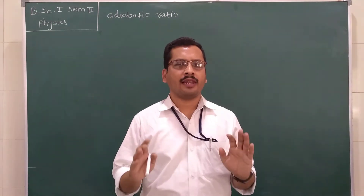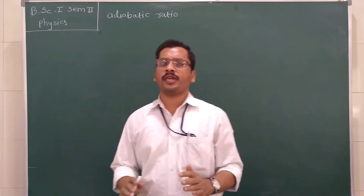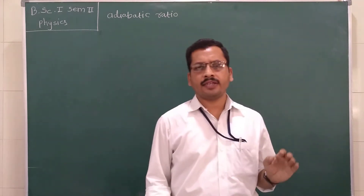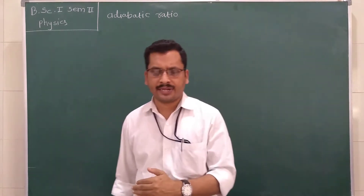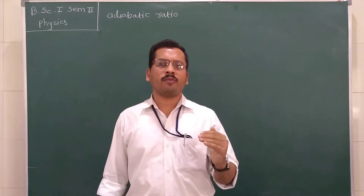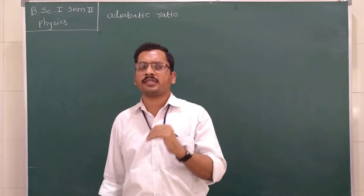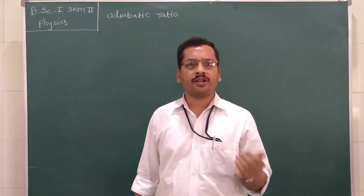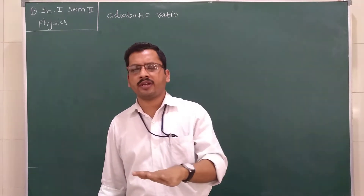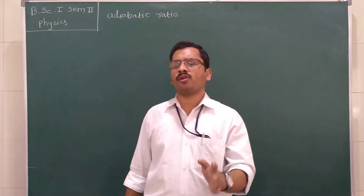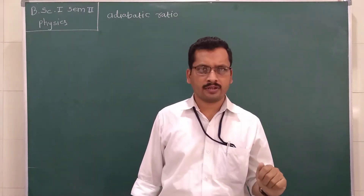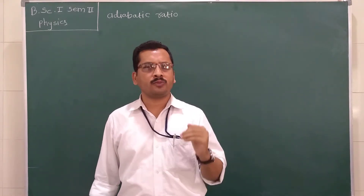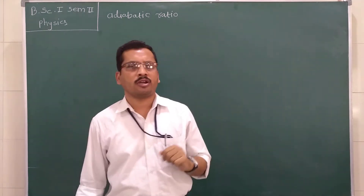Good morning students. In the last lecture, we learned the specific heat of gases. We know there are two types of specific heat for gases: principal specific heat and molar specific heat. Principal specific heat is the amount of heat required to raise the temperature of a unit mass of a gas by 1 degree Celsius. Molar specific heat is the amount of heat required to raise the temperature of 1 mole of gas by 1 degree Celsius. These two types are also divided into specific heat at constant pressure and constant volume.